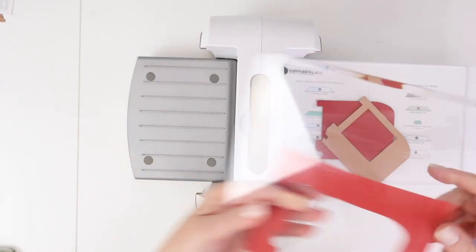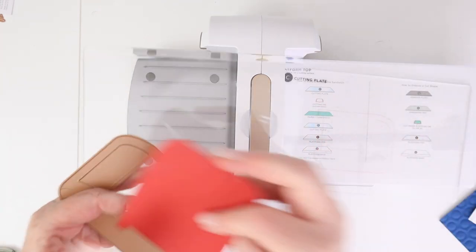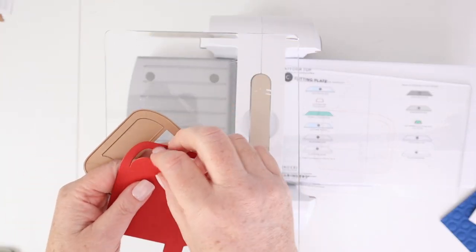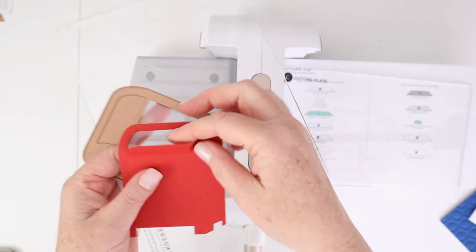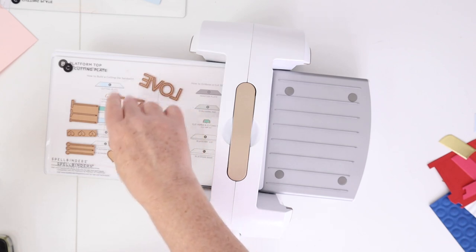So I was very happy with how the system die cut as well. It's pretty much the same type of sandwich that you use on your normal Platinum 6. You just have those extended plates as well, but it did die cut beautifully. So I'm going to do a little more die cutting.